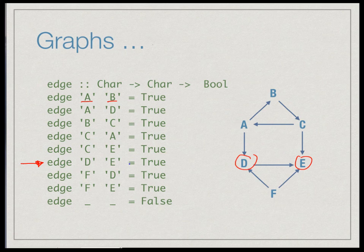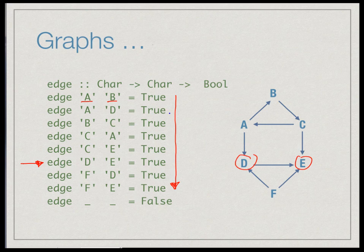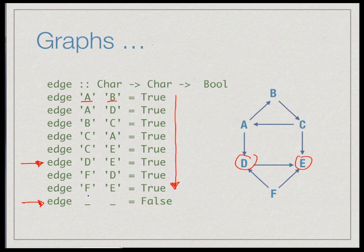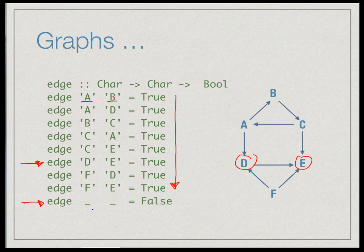We exhaustively enumerate all edges in the graph — since our graphs are finite there are only finitely many edges. Then we have a default rule: any pair of vertices not mentioned explicitly in the edge function is not connected, so `edge` returns False. This also covers vertices whose names are not mentioned, like w, x, y, z.